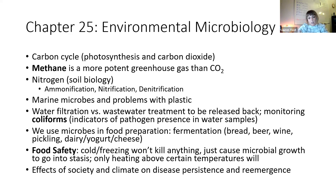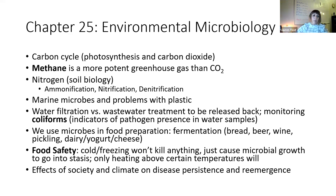It turns out that methane is a more potent greenhouse gas than carbon dioxide. It seems to be largely produced by the cattle industry, as well as methanogens found in anaerobic swamps.